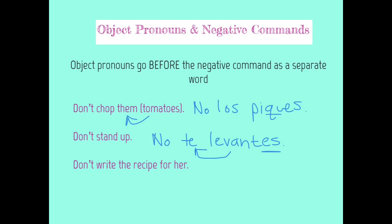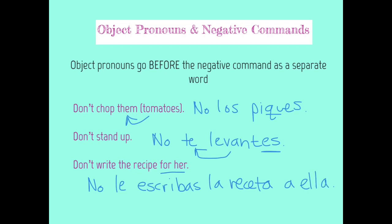Don't write the recipe for her — now we've got an IOP. No le escribas la receta a ella. The 'for her' is represented by the IOP le, clarified by the additional indirect object a ella. The IOP is situated before the command form as a separate word. Again, this is the same for all negative commands regardless of type — if you've got a negative command, your object pronoun must go before the verb.